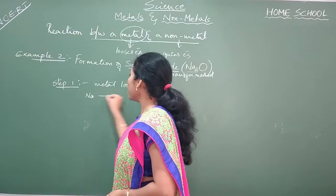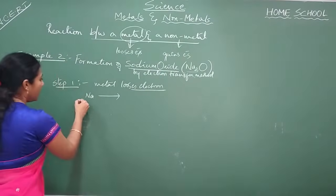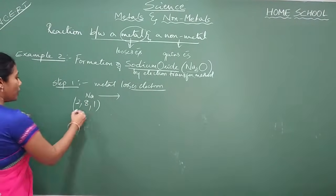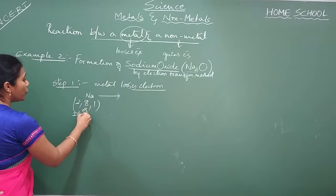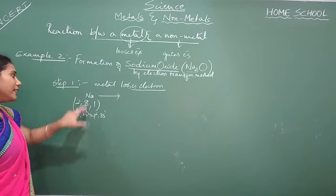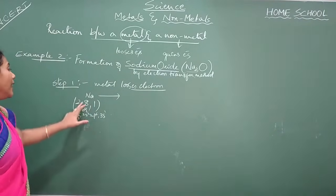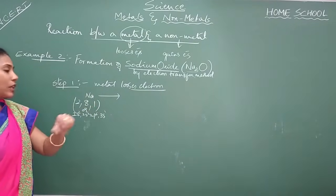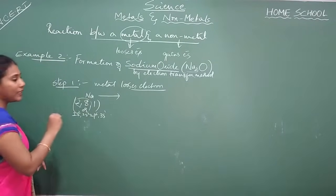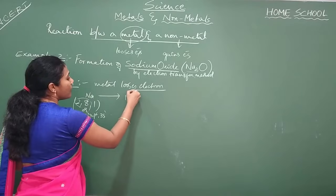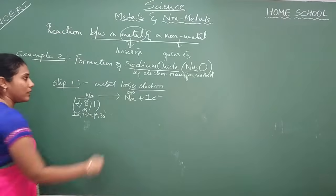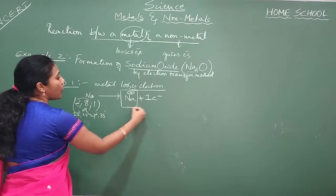I will take sodium. Sodium's electronic configuration is 2, 8, 1 — or you can also write it as 1s², 2s², 2p⁶, 3s¹. Either way you can use. Sodium always loses 1 electron, because on losing 1 electron it gains the electronic configuration of neon. So on losing 1 electron, our sodium becomes Na⁺. Sodium ion has formed in this step.